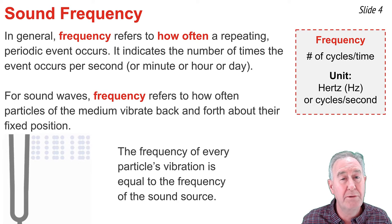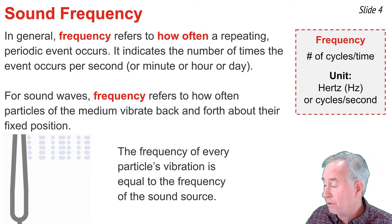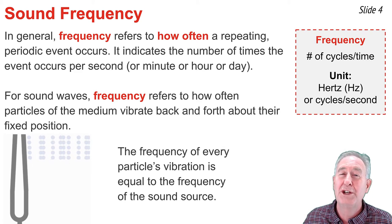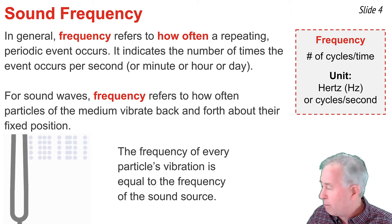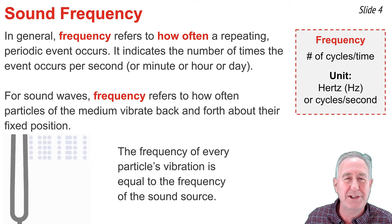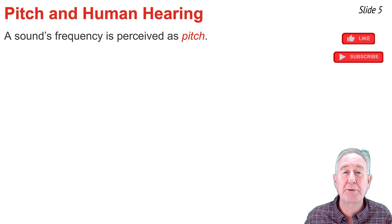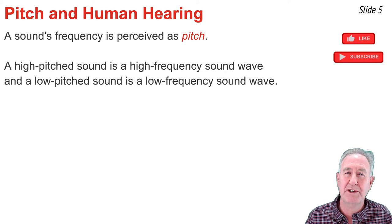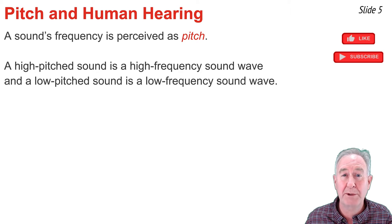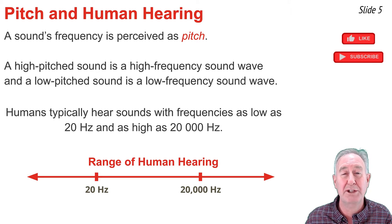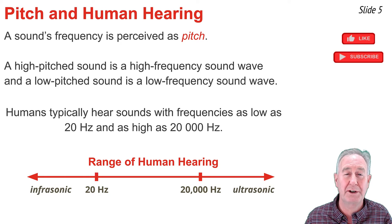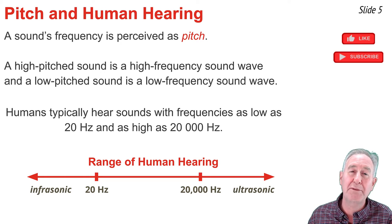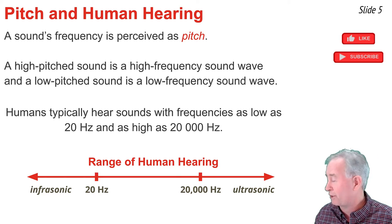So if the source of a sound wave is a tuning fork vibrating back and forth, and the tines of the tuning fork vibrate 260 times per second, then every particle of the medium will also vibrate back and forth 260 times per second. A sound's frequency is perceived as its pitch. A high-pitched sound is perceived as a high-frequency sound wave, and a low-pitched sound as a low-frequency sound wave. Humans can typically hear frequencies as low as 20 Hz and as high as 20,000 Hz — this is referred to as the audible range. A sound below 20 Hz is infrasonic, and above 20,000 Hz is ultrasonic.